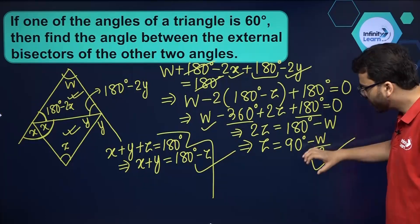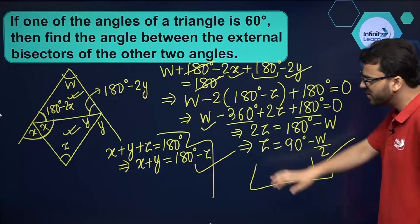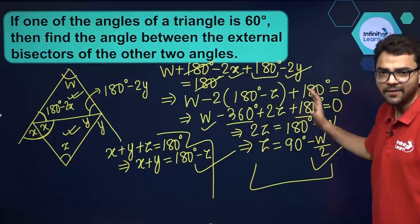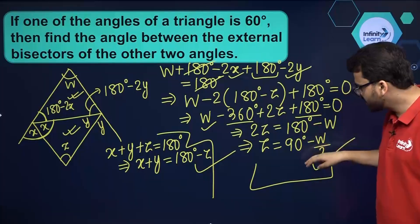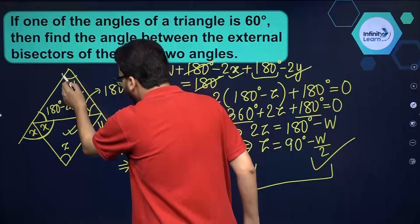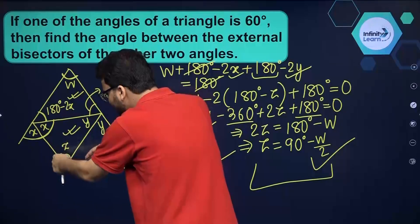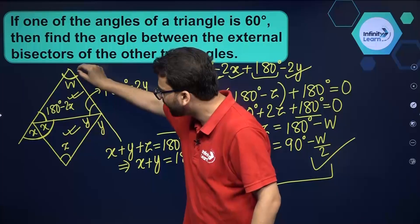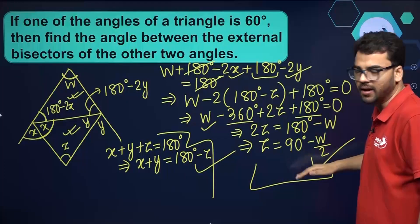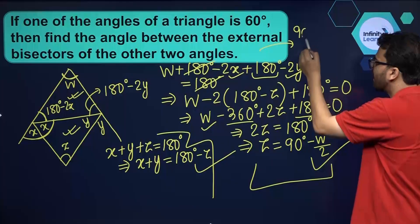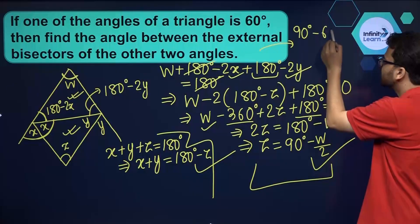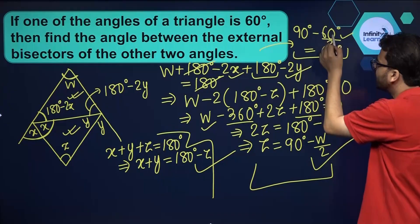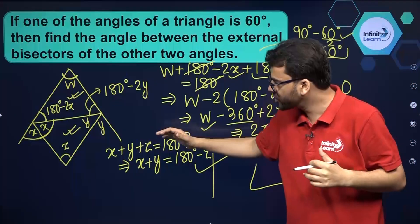You must remember this result — it should be on your fingertips. Because in an Olympiad or any competitive examination, you don't have time to derive all of this. This result means: if you are given an angle w in a triangle and need the angle z between the external bisectors of the other two angles, then z equals 90 minus half of w. Applying this to our question where the given angle is 60 degrees: z equals 90 minus 60 divided by 2, which is 90 minus 30, giving the answer as 60 degrees.